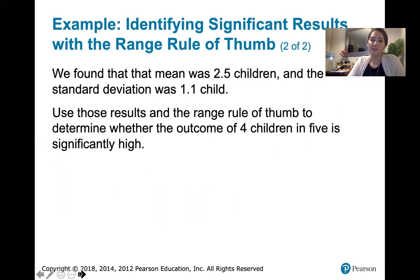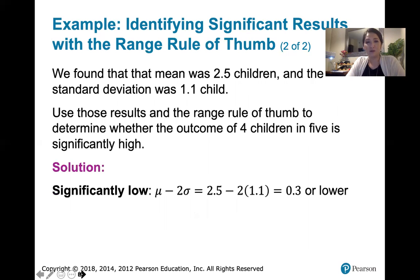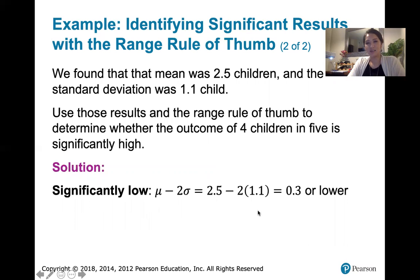Now we want to use those results and the range rule of thumb to determine whether the outcome of four children out of five inheriting the disorder is significantly high in a statistical sense. To do that, we first find the significantly low threshold: mean minus two times the standard deviation, so 2.5 minus 2 times 1.1, which is 2.5 minus 2.2, giving 0.3 or lower. Any value less than 0.3 is a significantly low value.